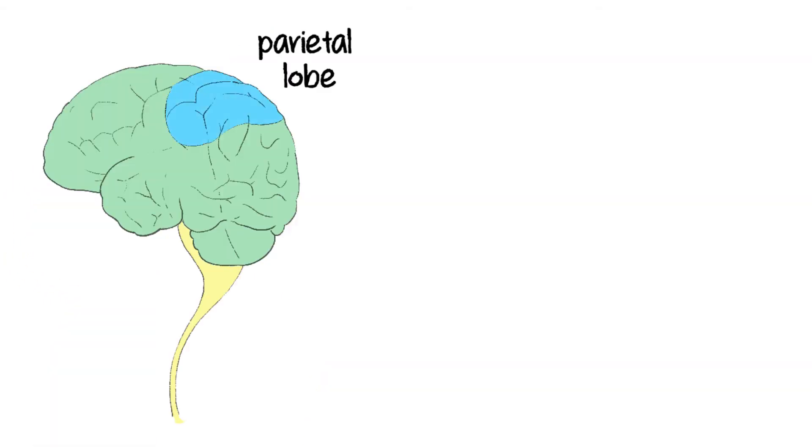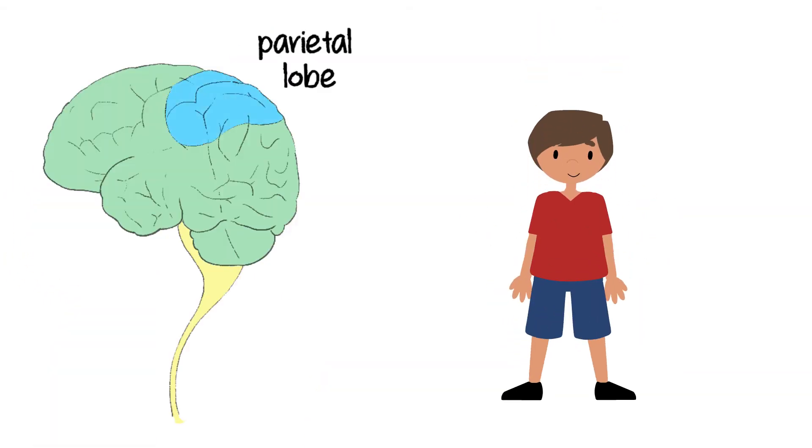At the level of the parietal lobe, we get a conscious moving picture of our body from inside our muscles. This helps us know where our body is.